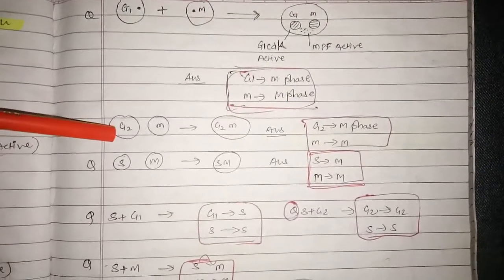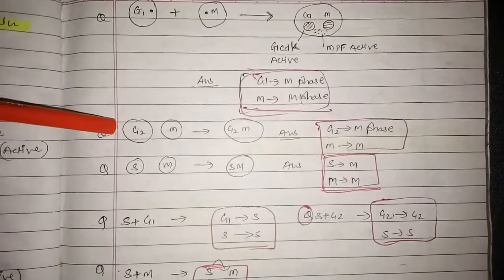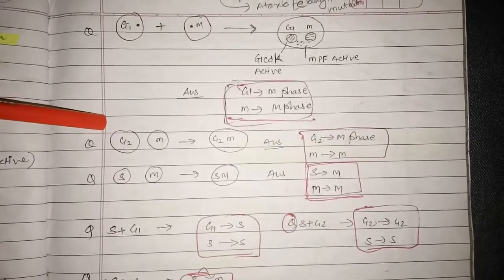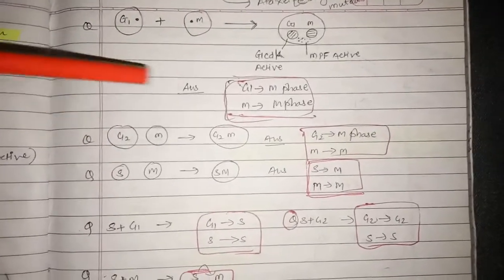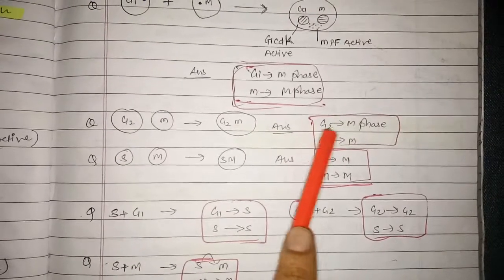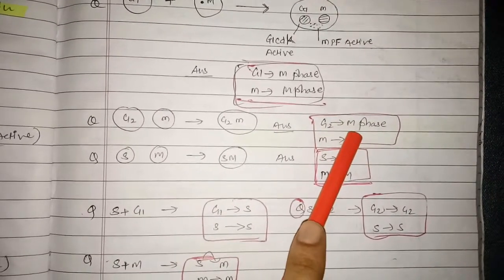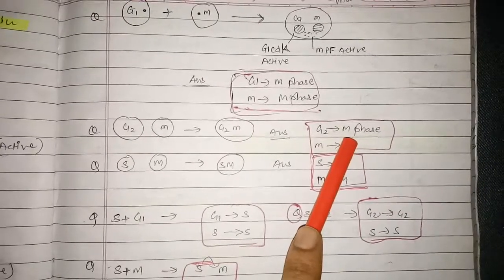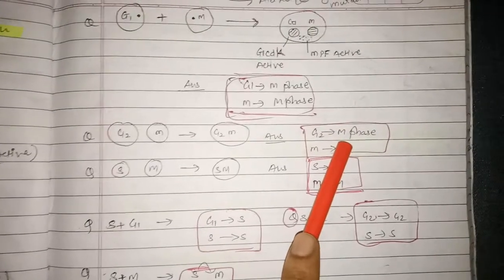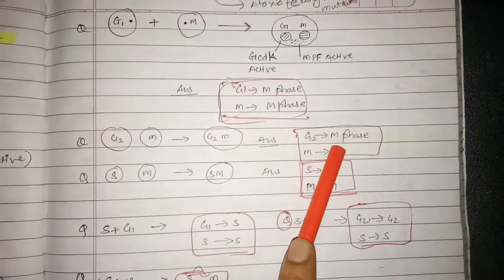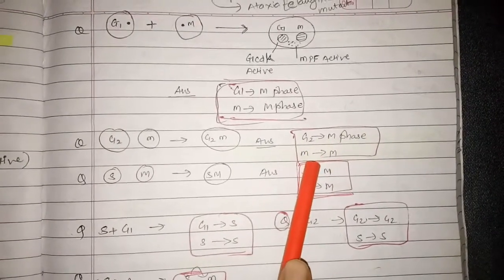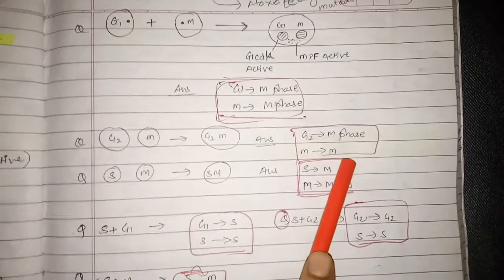Now let us look at the second condition, in which the cell in the G2 stage and M stage are fused together. When they are fused together, what will happen? The cell which is in the G2 stage is expected to enter into the M phase because MPF is already active. The sequence of the cell cycle is G1, S, G2, and M phase. So after G2 comes M phase. Thus the G2 cell stage will enter into M phase, and the M phase cell will remain in the M phase itself.